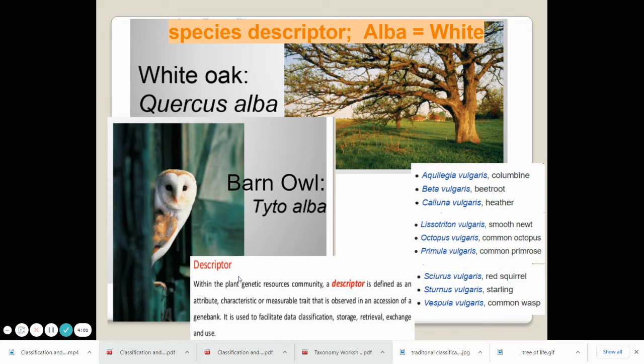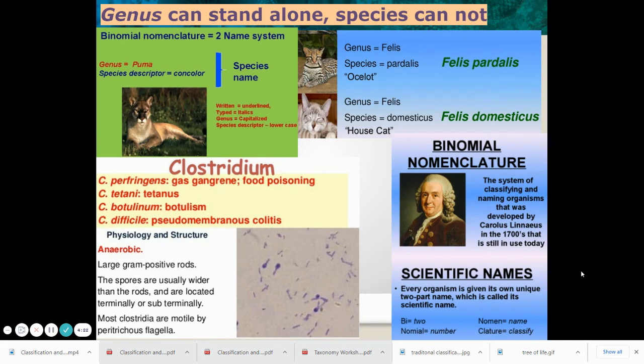So we couldn't just write alba because just looking at this example, we could be talking about a tree or we could be talking about an owl. Same thing with the vulgaris. If we wrote vulgaris, we could be talking about a beet root or we could be talking about a newt or maybe even a squirrel. So you definitely do not want to write the species by itself.